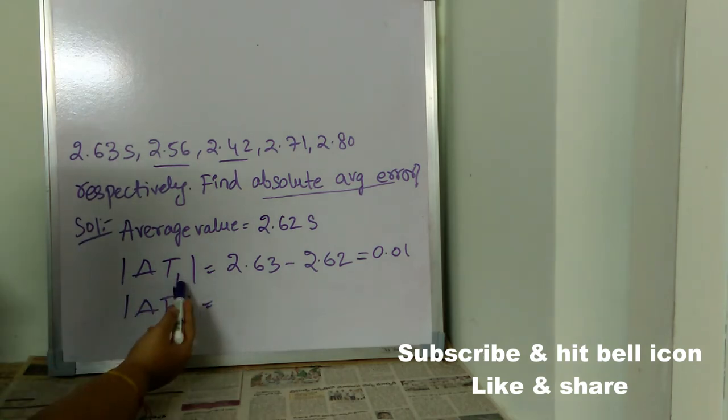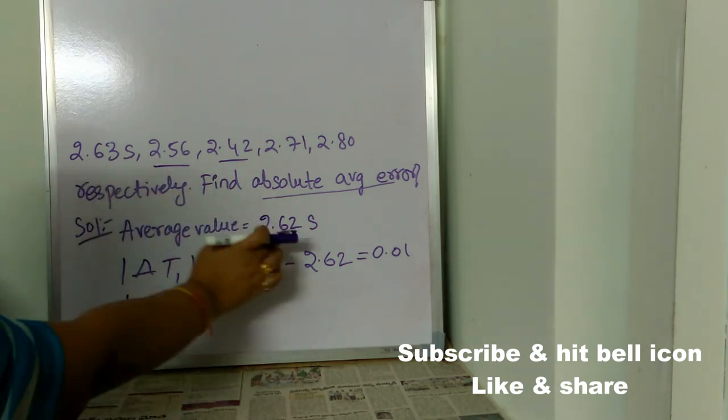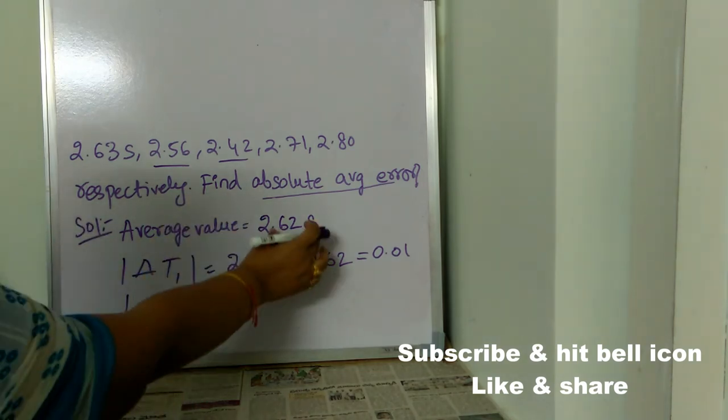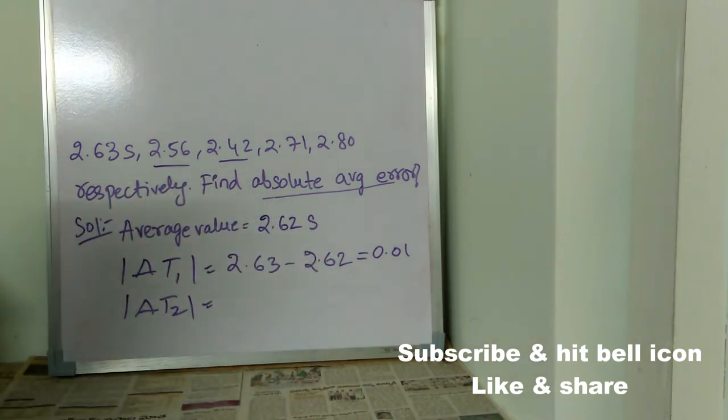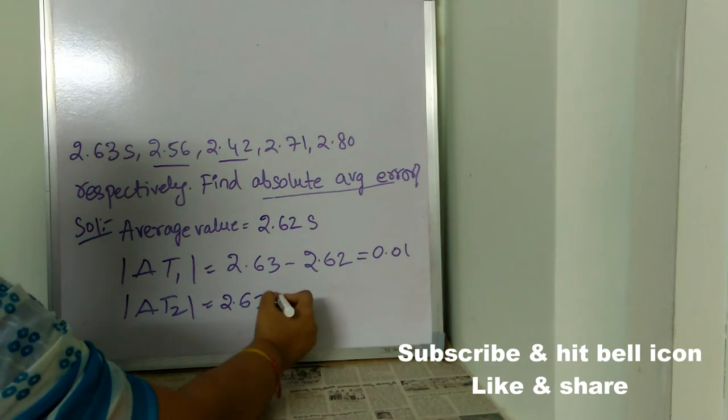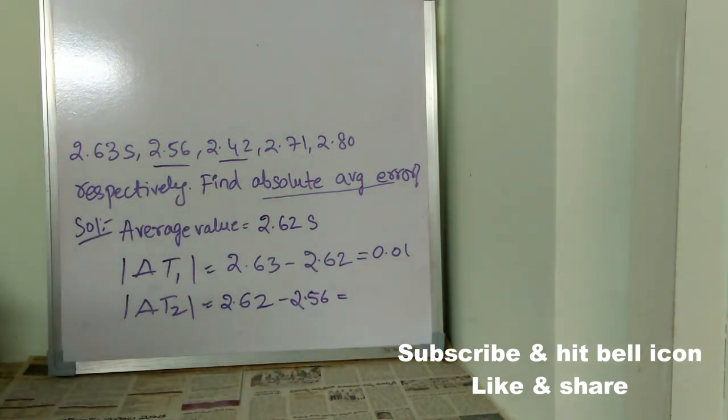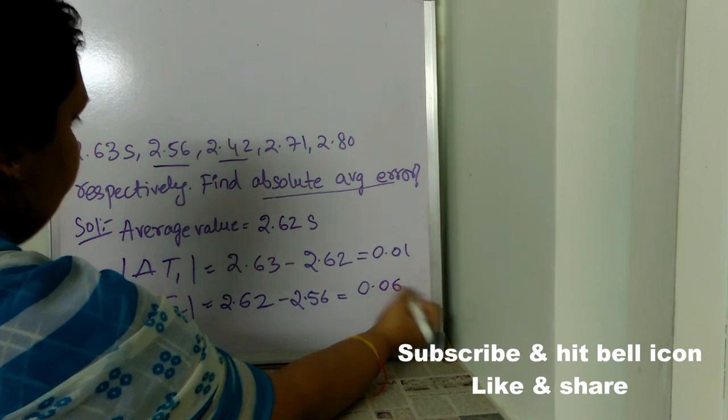See what we did in delta T1. We found the difference between the first given value and the average. In delta T2, we need to find the difference between the second value and the average which we found. So, 2.62 minus 2.56 where the difference is 0.06.